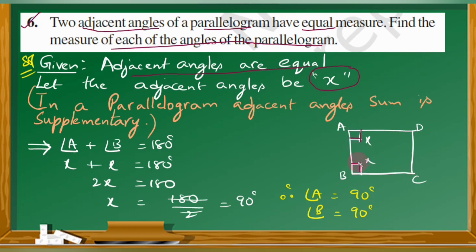So angle A and angle B are the two adjacent angles. We denote them with the variable x. So angle A is x and angle B is also x — the two are equal. Now here we use one property of the parallelogram: adjacent angles are supplementary, meaning they add up to 180 degrees.